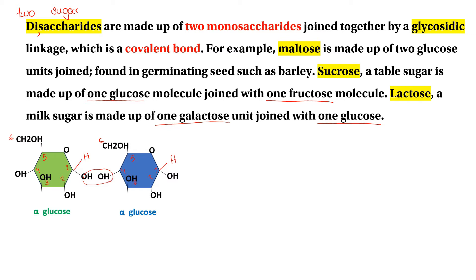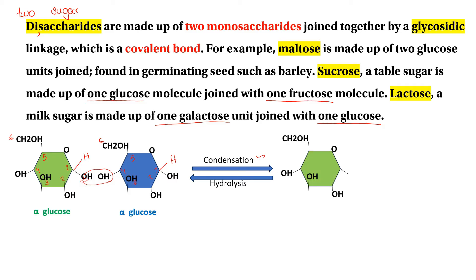The second one is H2O. This is the condensation reaction. If you have a condensation reaction, carbon number 1 and carbon number 4 — H2O will be released as oxygen. Alpha-glucose and another alpha-glucose will be joined.